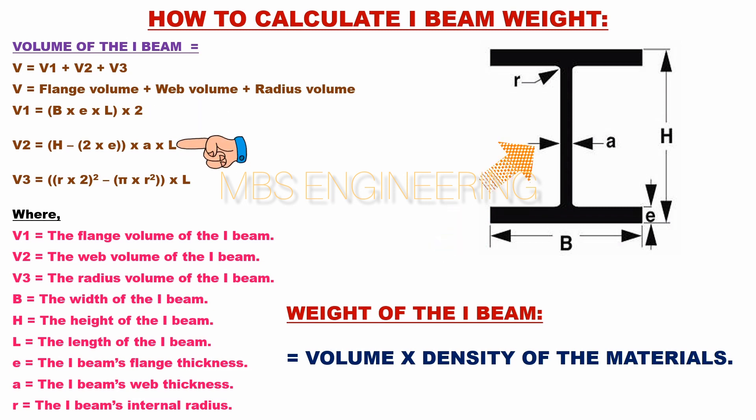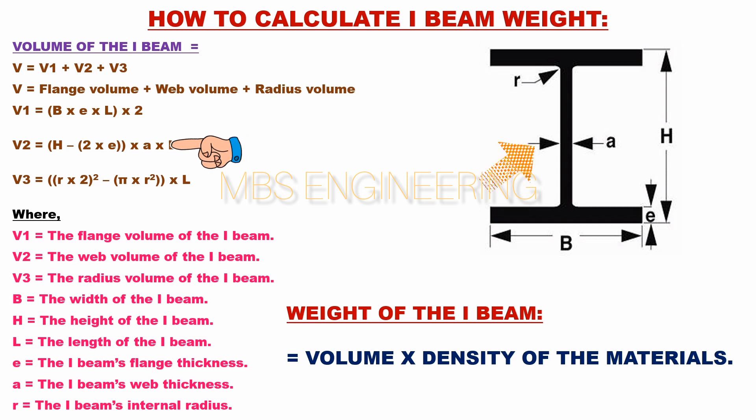V2 is the web volume of the beam. The formula for V2 equals (H minus 2A) multiplied by A multiplied by L.